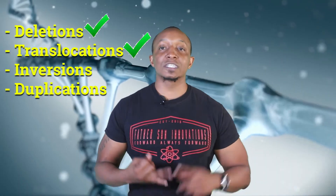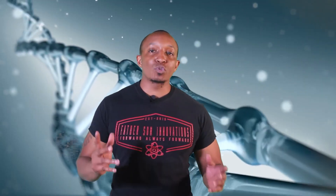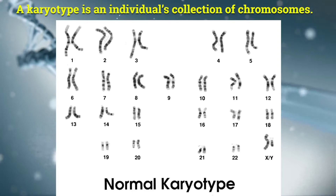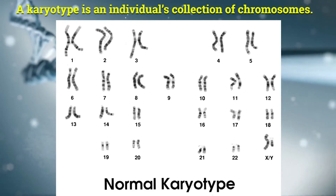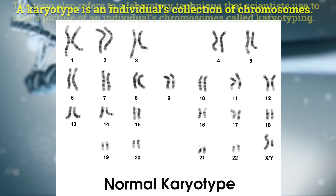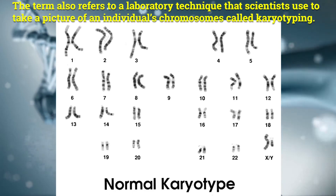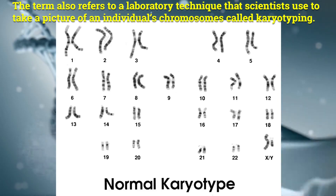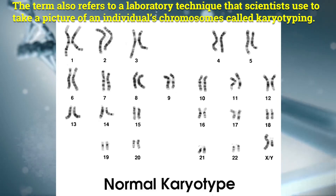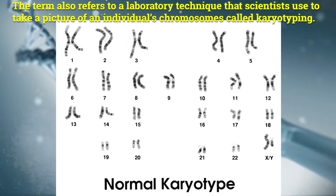In today's video, we will break down the four types of chromosome mutations, which are deletions, translocations, inversions, and duplications. One major way scientists are able to properly analyze chromosome mutations is through the use of karyotypes. A karyotype is an individual's collection of chromosomes. The term also refers to a laboratory technique that scientists use to take a picture of an individual's chromosomes, called karyotyping.